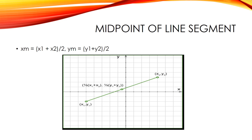The coordinates of the midpoint M (XM, YM) of the line segment AB, where A is (x1, y1) and B is (x2, y2), are: XM = (x1 + x2) / 2 and YM = (y1 + y2) / 2.